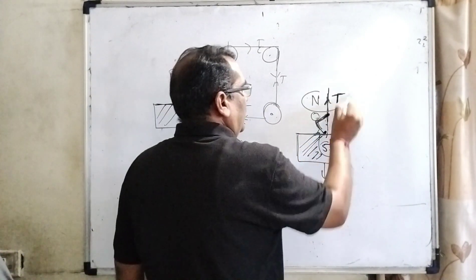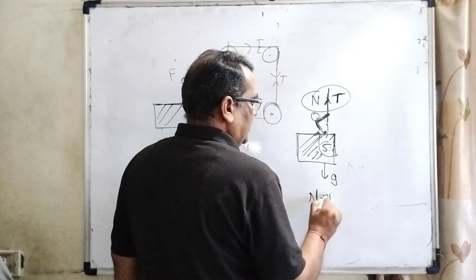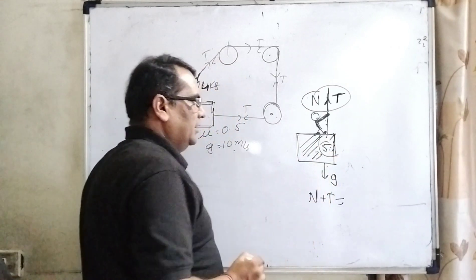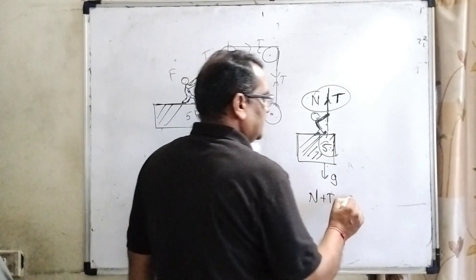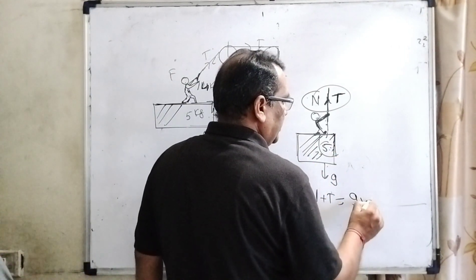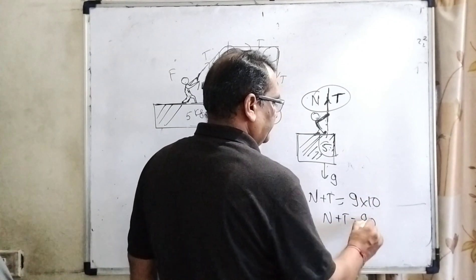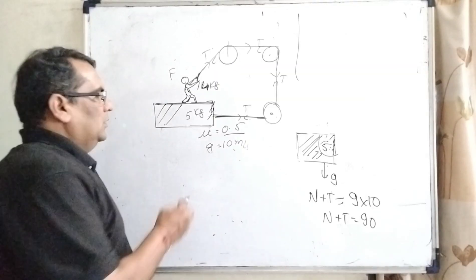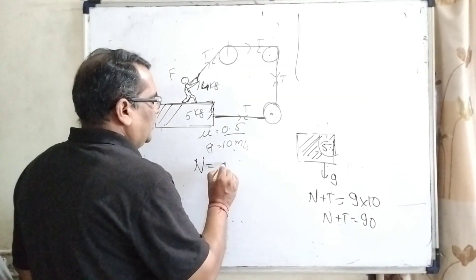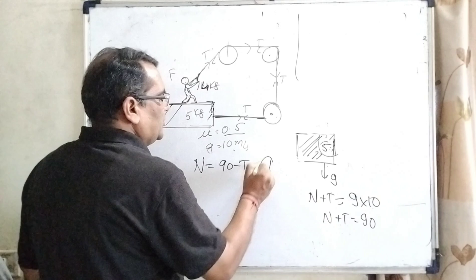So here N plus T is equal to total weight: 5 plus 4 is 9, and g is 10, then N plus T equal to 90. Then normal force N equal to 90 minus T. It is the first equation.